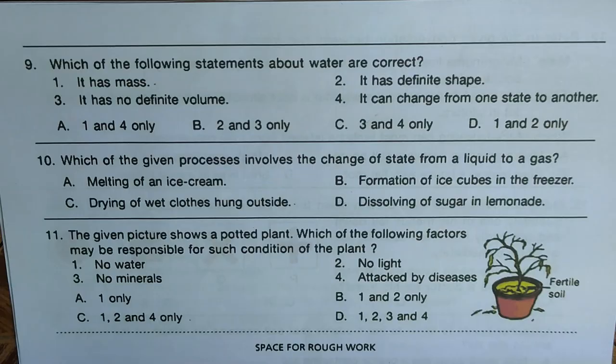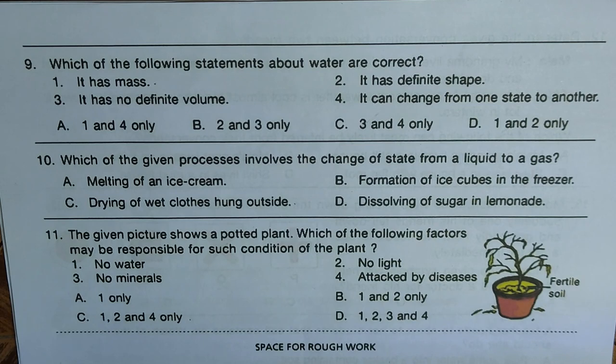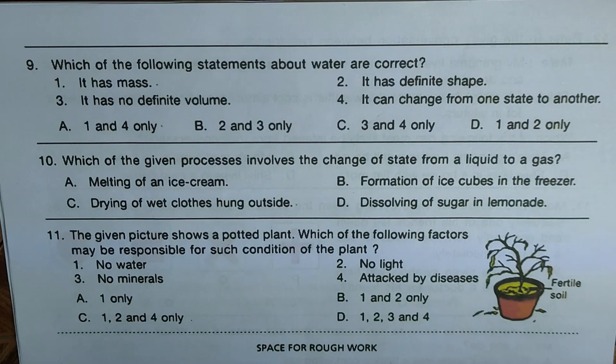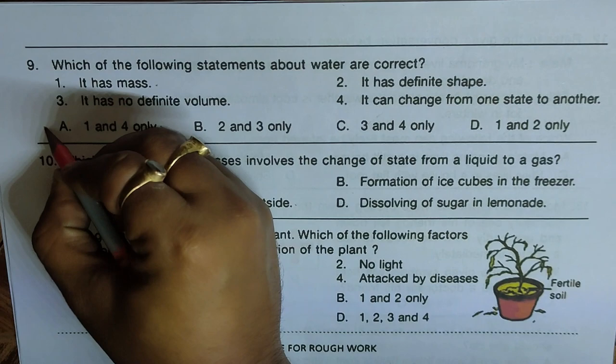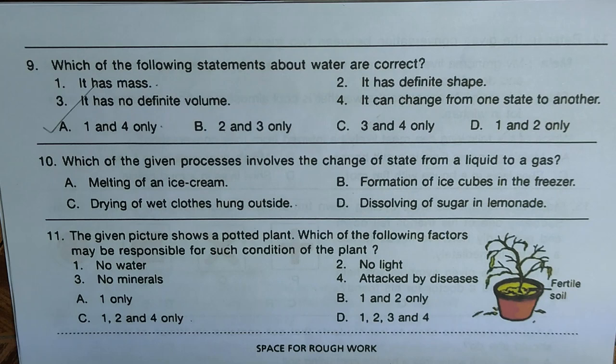Question nine: which of the following statements about water are correct? Statement 1: it has mass. Statement 2: it has a definite shape. Statement 3: it has no definite volume. Statement 4: it can change from one state to another. Water has mass — that is correct. It can also change from liquid to gas or from solid ice to liquid. Statements 1 and 4 are correct, so option A is the right answer.